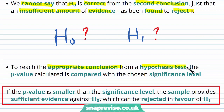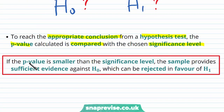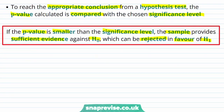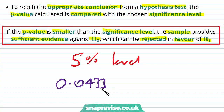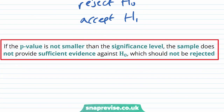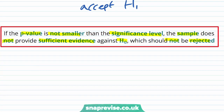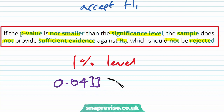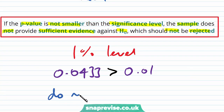To reach the appropriate conclusion, the p-value is compared with the chosen significance level. If the p-value is smaller than the significance level, the sample provides sufficient evidence against H0 which can be rejected in favour of H1. For example, at the 5% significance level — always decided before conducting the test — our p-value of 0.0433 is strictly less than 0.05, so we reject H0 and accept H1. Conversely, at the 1% significance level, 0.0433 is strictly greater than 0.01, so we do not reject H0.